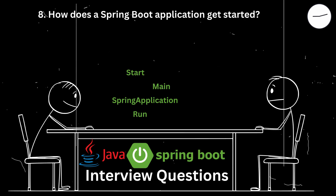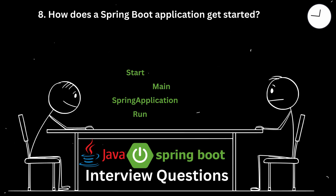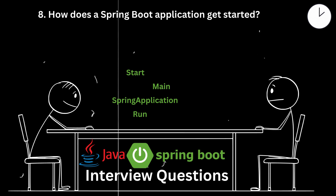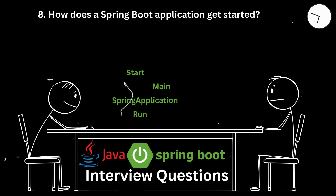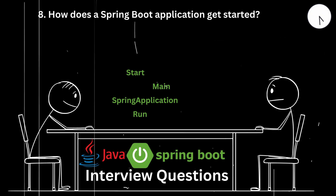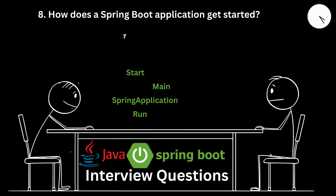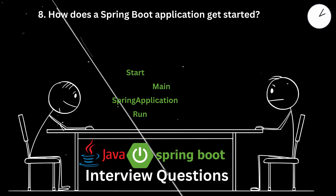How does a Spring Boot application get started? A Spring Boot application starts by executing the main method, which calls SpringApplication.run(Application.class, args). This method initializes the Spring context, auto-configures components, and starts the embedded server if applicable. In a real estate application, this entry point initialized the Spring context, configured the components, and started the embedded Tomcat server.